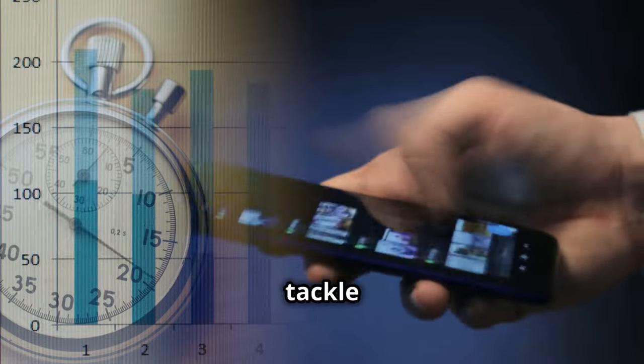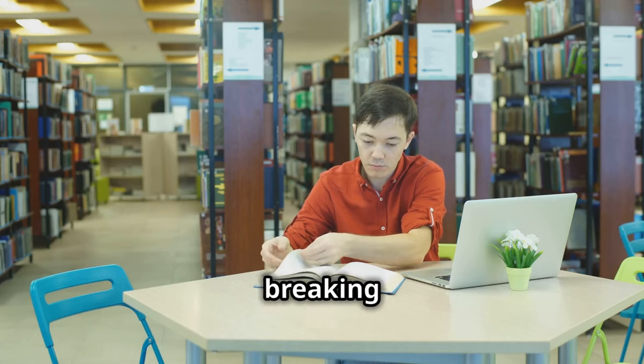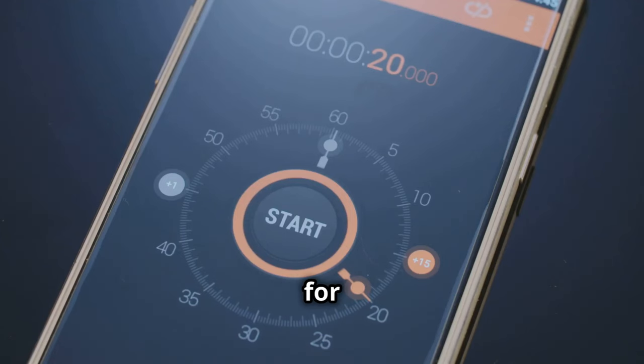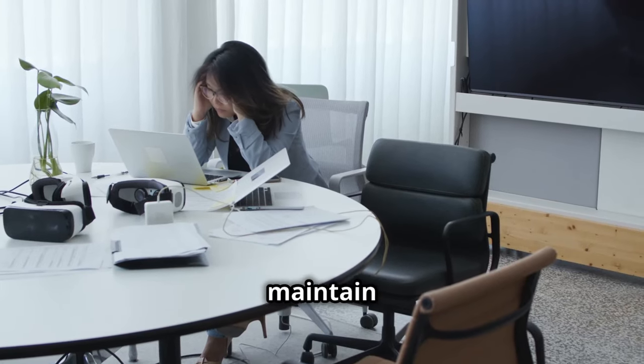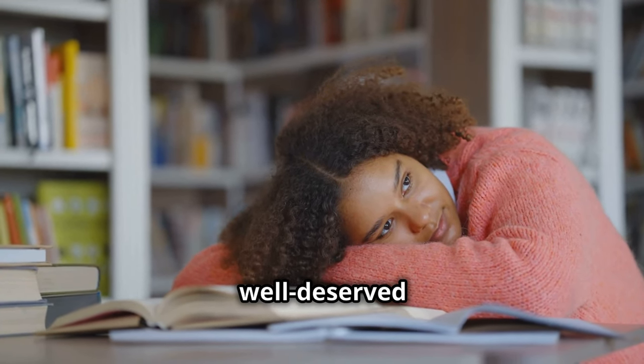Now let's tackle the dreaded procrastination monster with the Pomodoro technique. This method is all about breaking down your study sessions into manageable chunks. Set a timer for 25 minutes of focused work followed by a five-minute break. This cycle helps maintain focus and prevents burnout. Trust me, your brain will thank you for these well-deserved breaks.